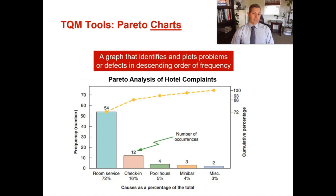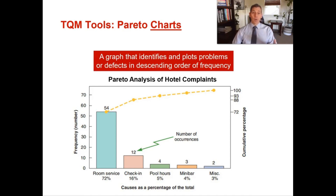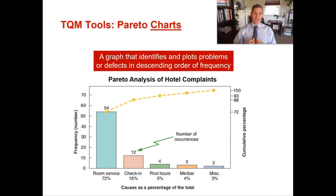Now we move on to tools for organizing data. A Pareto chart, also known as the 80-20 rule, is a graph that identifies and plots problems or defects in descending order of frequency. I use these all the time in my supply chain career to look for opportunities — for example, identifying where the majority of spend is, whether in chemistry, microbiology, or anatomic pathology.